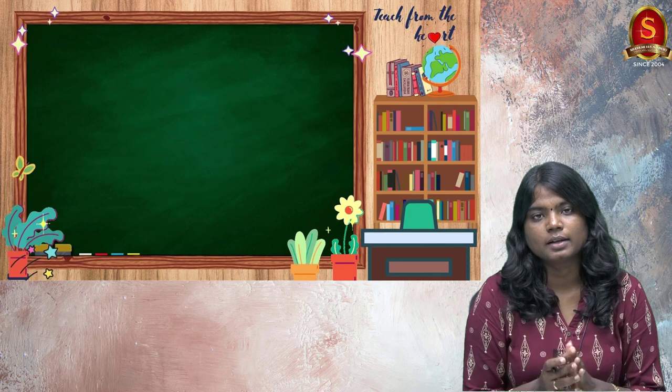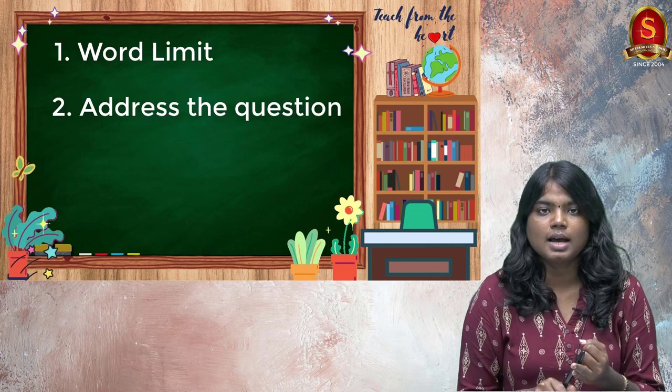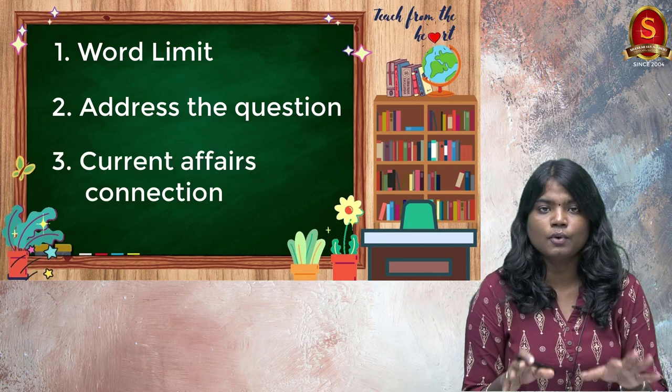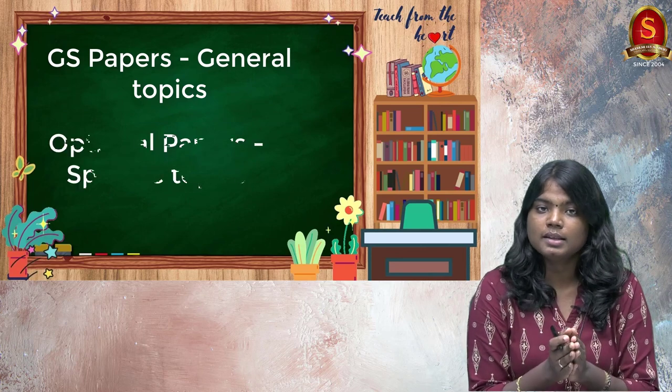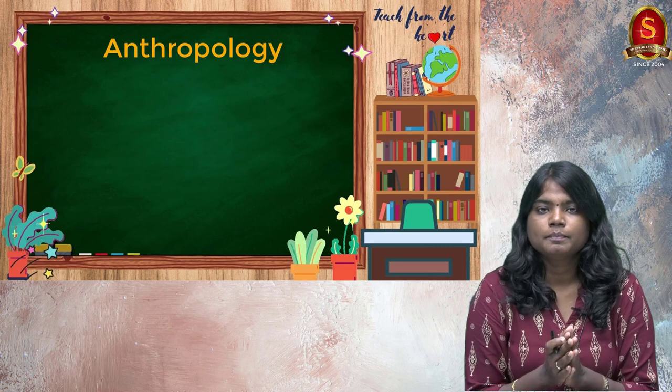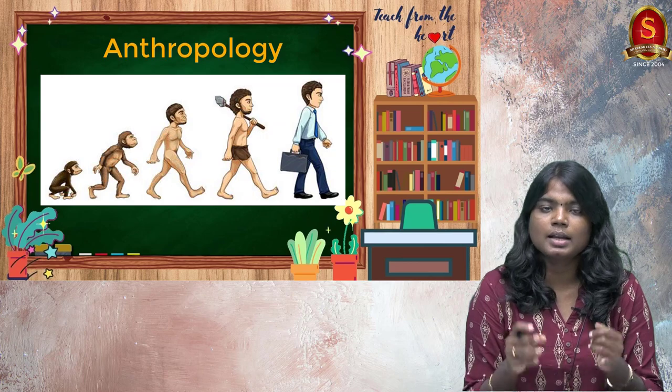For optional papers, the same approach should be followed — write in a simple and precise manner, stick to the word limit, address the question asked, and make connections with current affairs. The only difference is that GS papers are about general topics, but optional papers are a little more specific. Take anthropology, for example — in that paper we have theories of human evolution and other biological factors. You cannot write a generalized answer; you have to quote different theories, thinkers, and the evidences provided by them. The facts you quote in the optional paper must stick to the syllabus very strictly. This is the only difference while writing the optional paper.